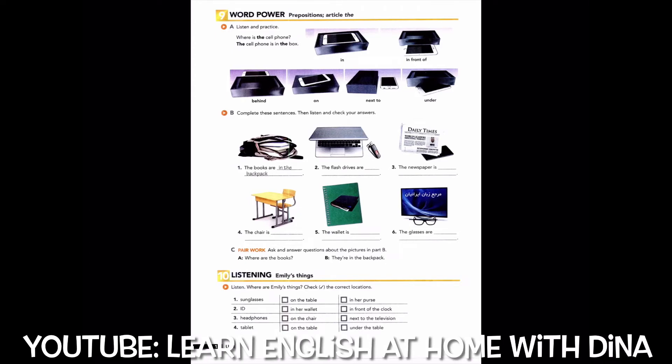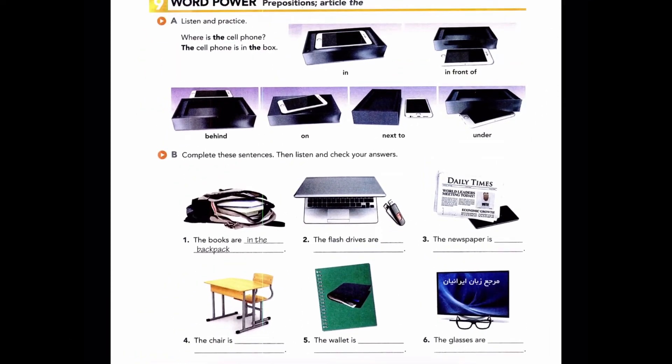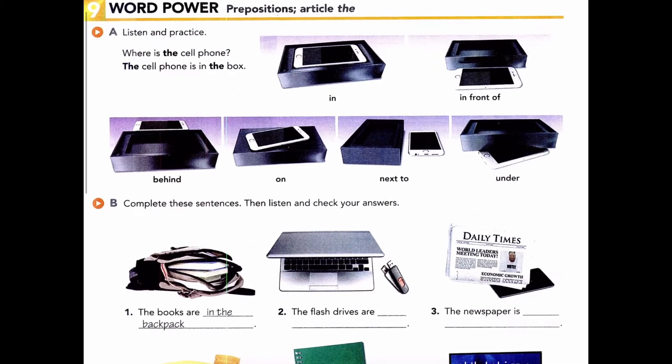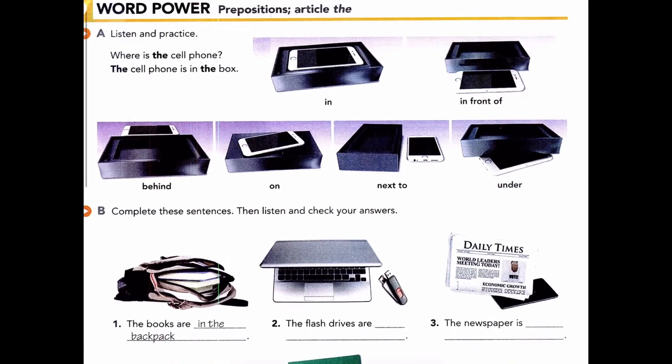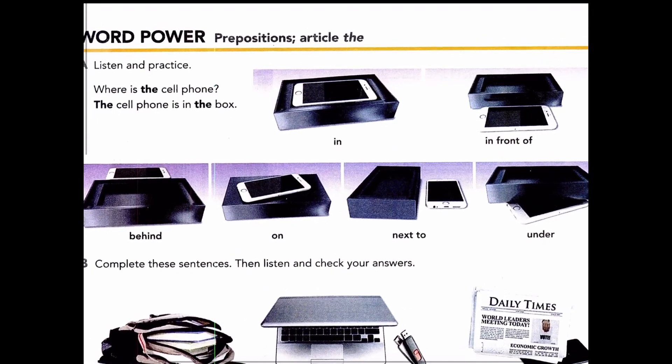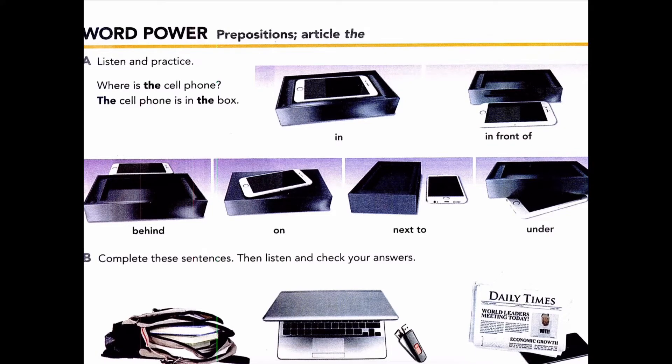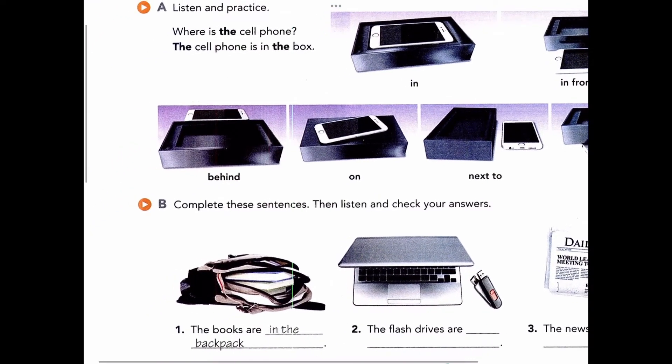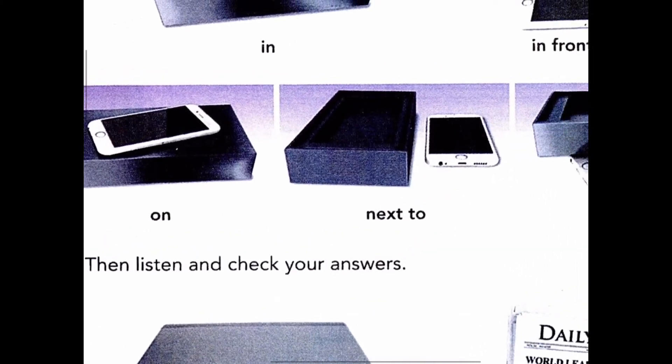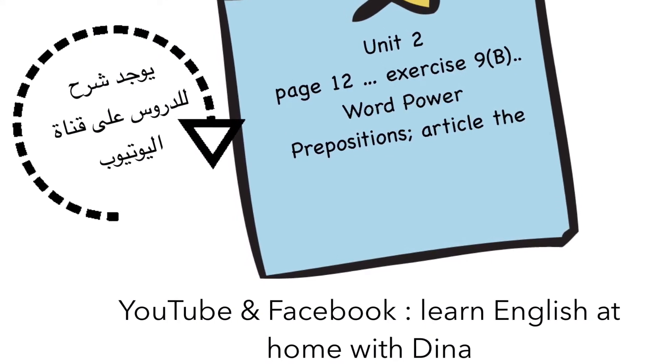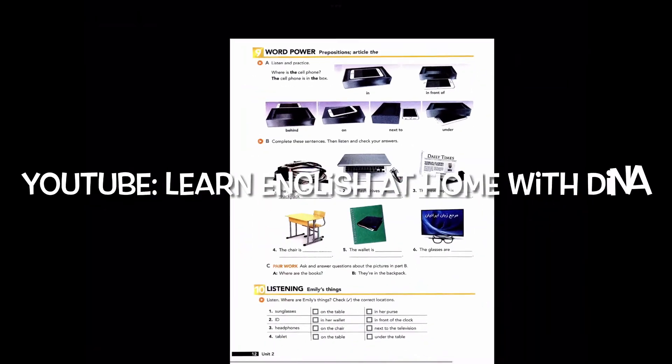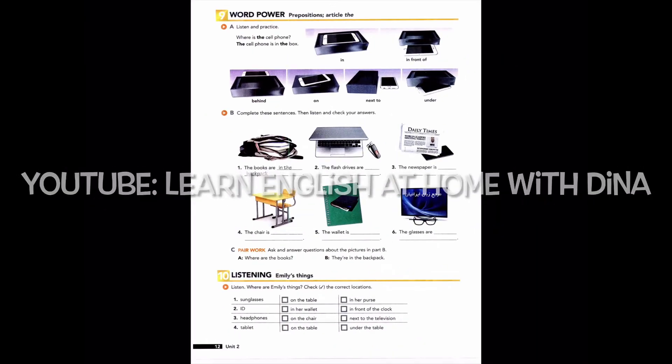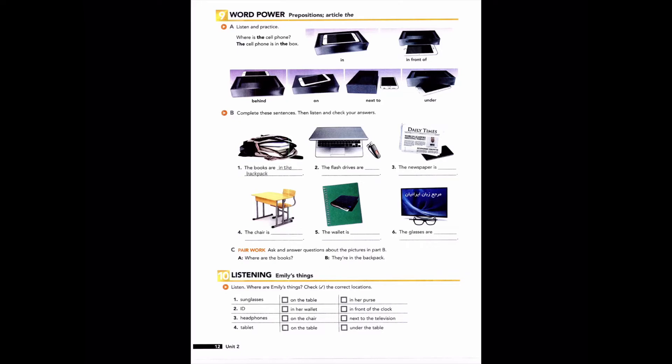Page 12, Exercise 9, Word Power: Prepositions, Article The. Part A: Listen and practice. Where is the cell phone? The cell phone is in the box. In, in front of, behind, on, next to, under.